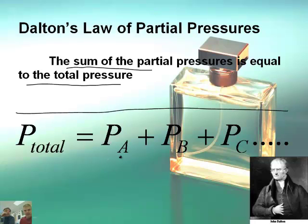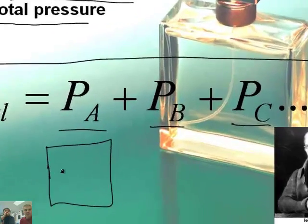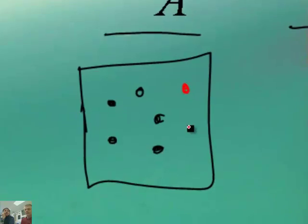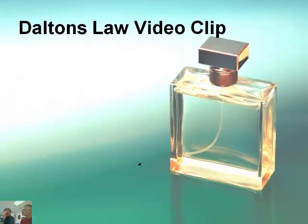So we can actually put that mathematically, like I have right here. The total pressure is equal to the pressure of gas A plus the pressure of gas B plus the pressure of gas C. And if there's a D or an E, this whole thing. So if you've got a gas in an enclosed container, you have gas A, which I'll symbolize by black dots, and then gas B by red dots. And we can add the total pressure.